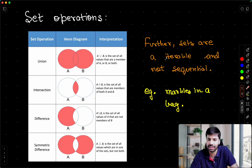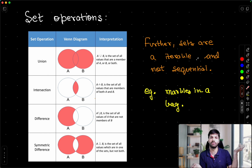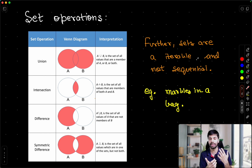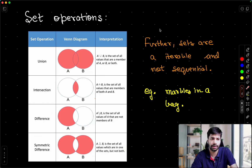Sets are also iterable — they are like marbles in a bag that you can pick one by one. But they are not sequential. As I mentioned in a previous video, there is a difference between an iterable and a sequence: sets are an iterable but not a sequence, because iterating over them does not guarantee the same order every time.